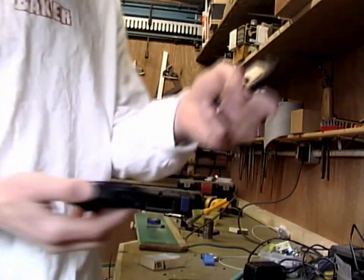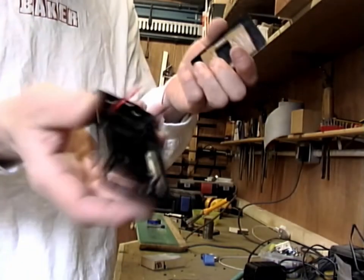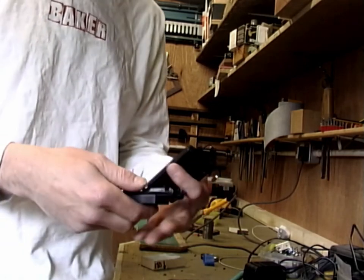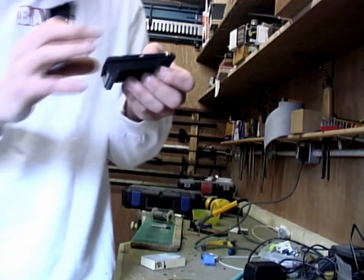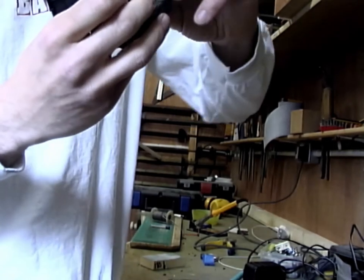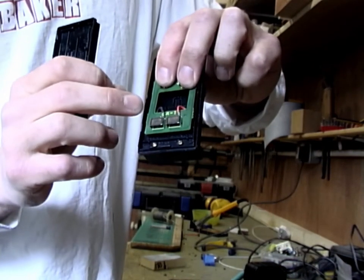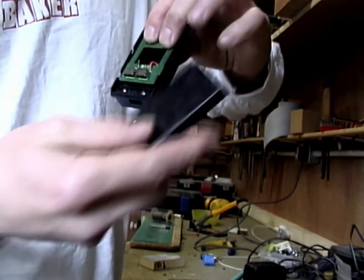Now I'm going to solder on the wires to the terminal and then put it together. I've just finished up soldering and as you can see we've got on the board the positive and negative terminals going to the corresponding terminals there.